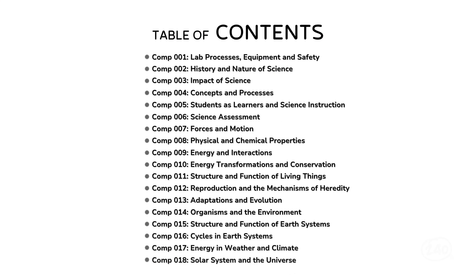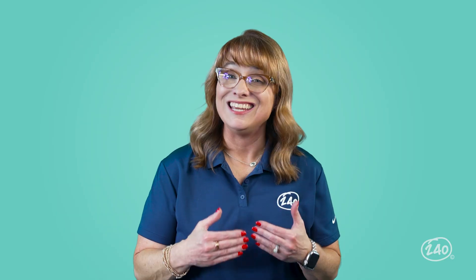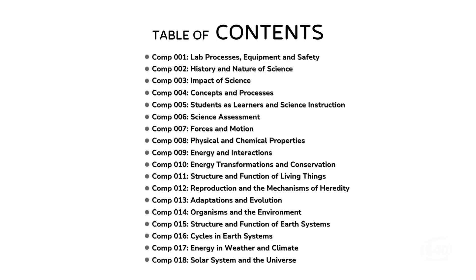The Core Subjects EC-6 science subtest consists of 18 areas called competencies. That's more than any other test in EC-6 — it's a lot. Here's the list of competencies as they're given to you, but we can clean this up a bit.